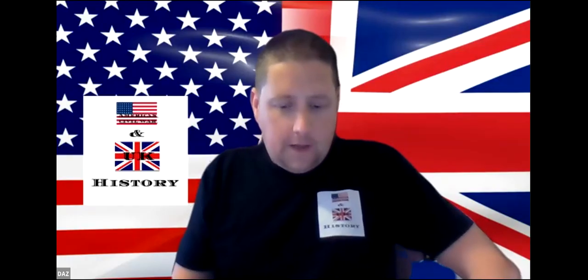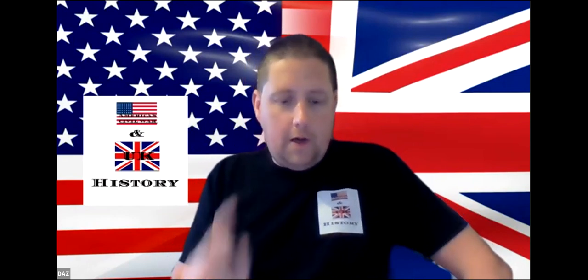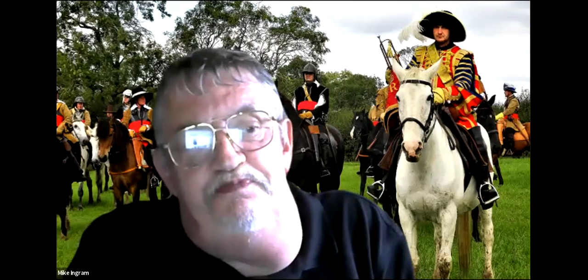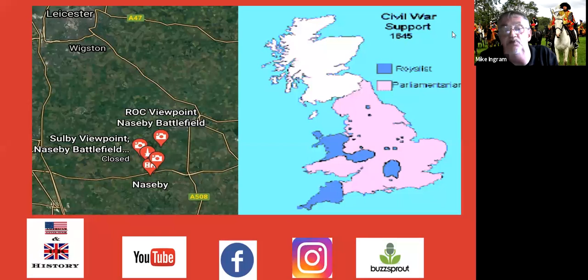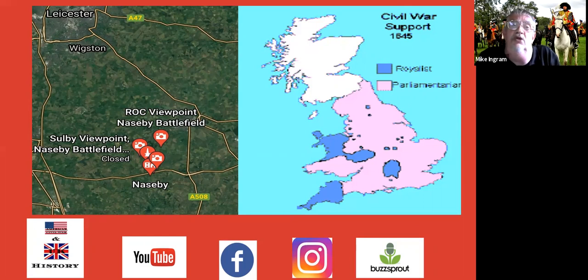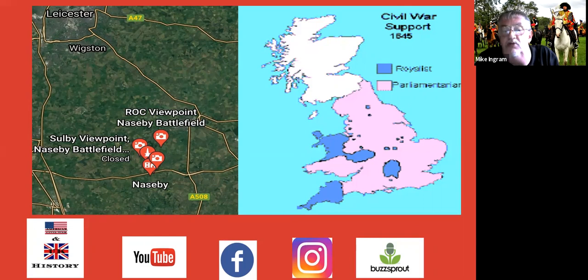So the Battle of Naseby, 1645 — what is going on in England at this point? It's confused, as it always is during this period. The Parliamentarians are in control of the north, the Royalists pretty much control most of the center and a good part of the south. There is a siege going on in the south causing some concern for Parliament, and the King is still based around Oxford, which is his headquarters.